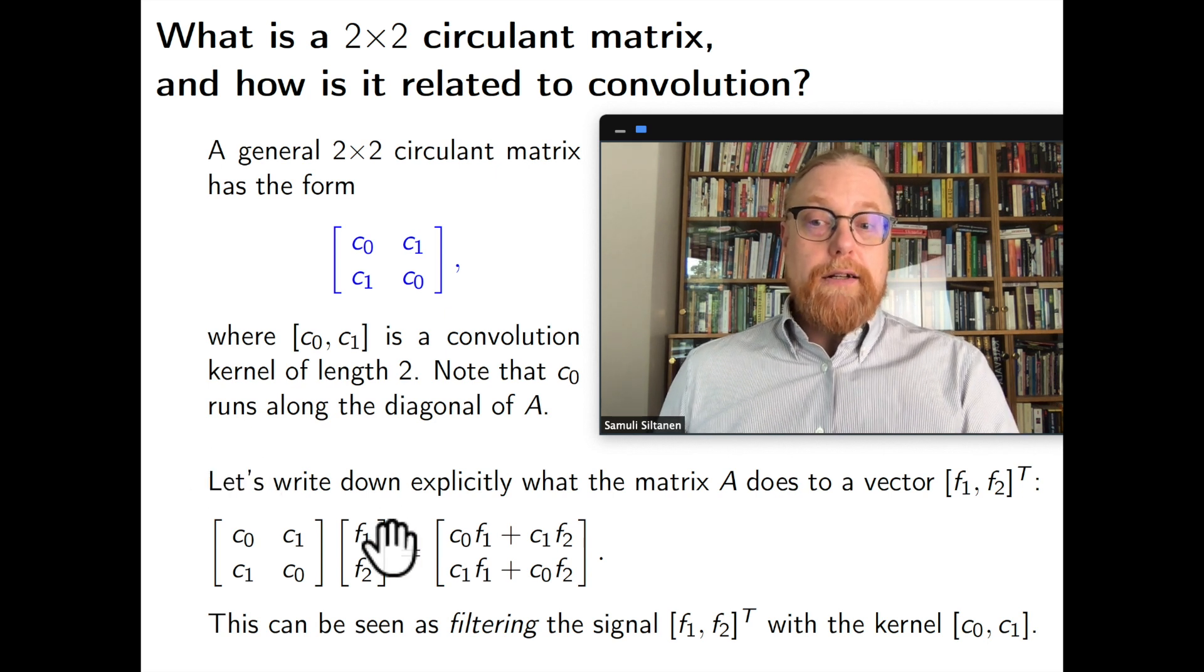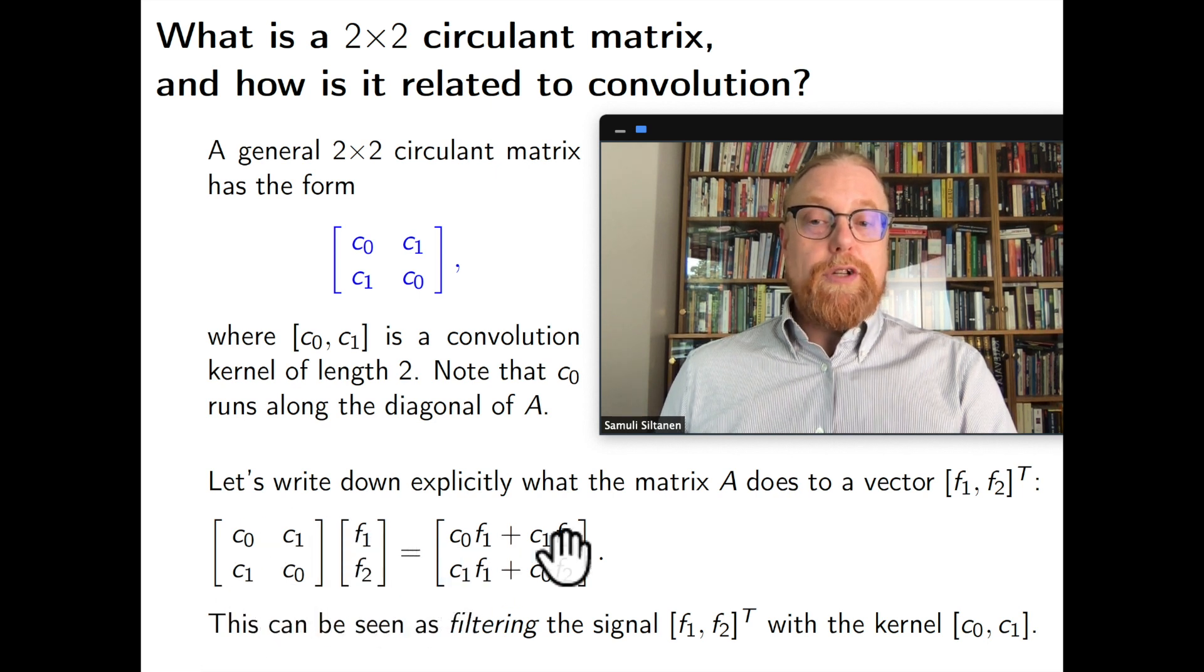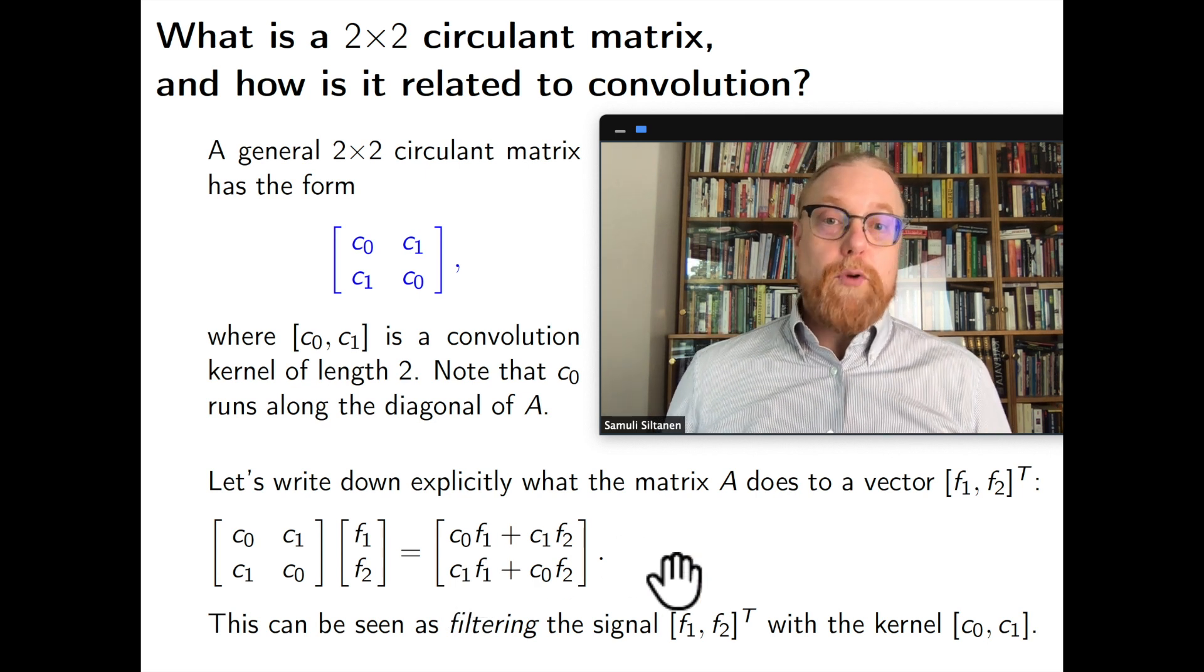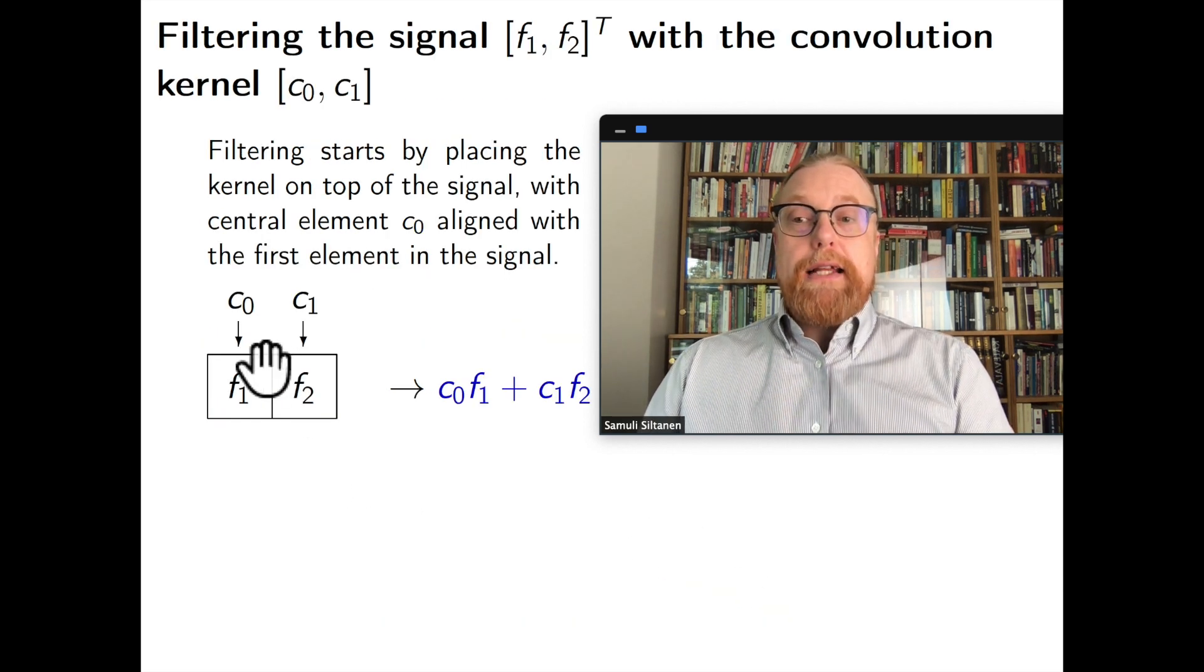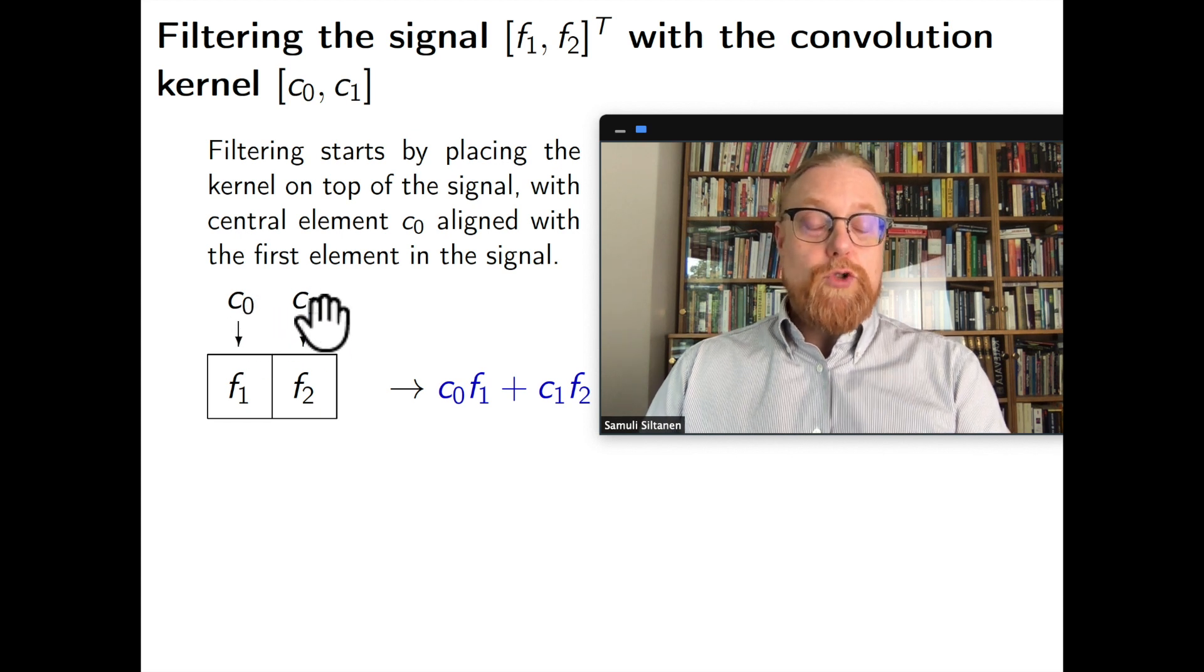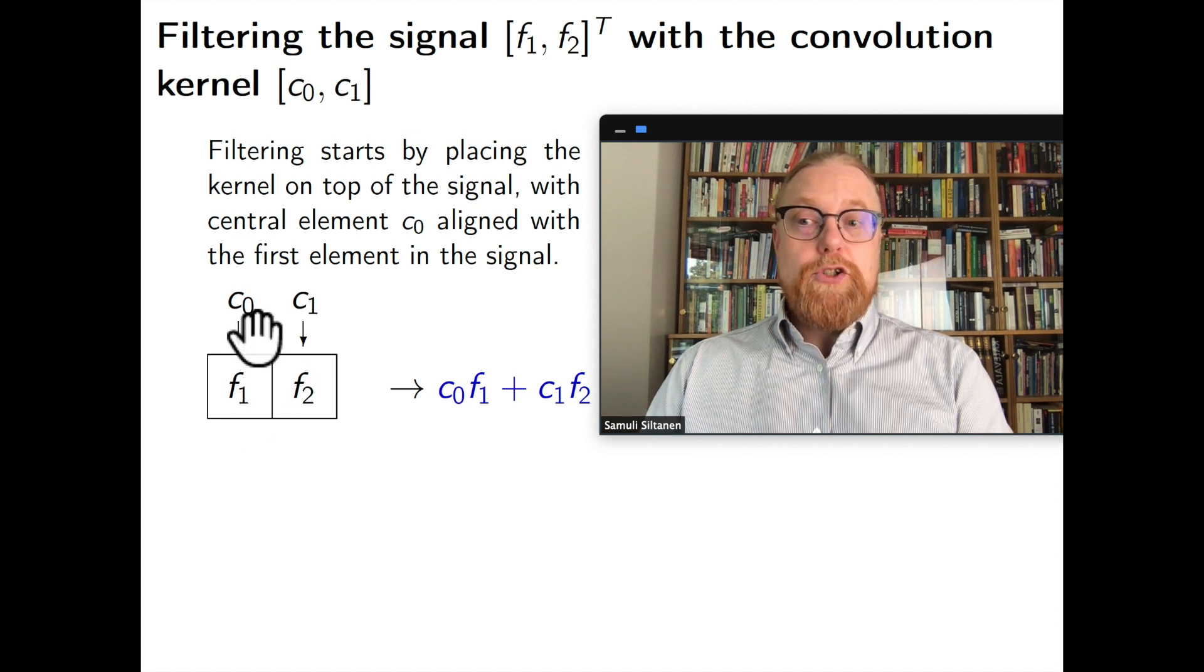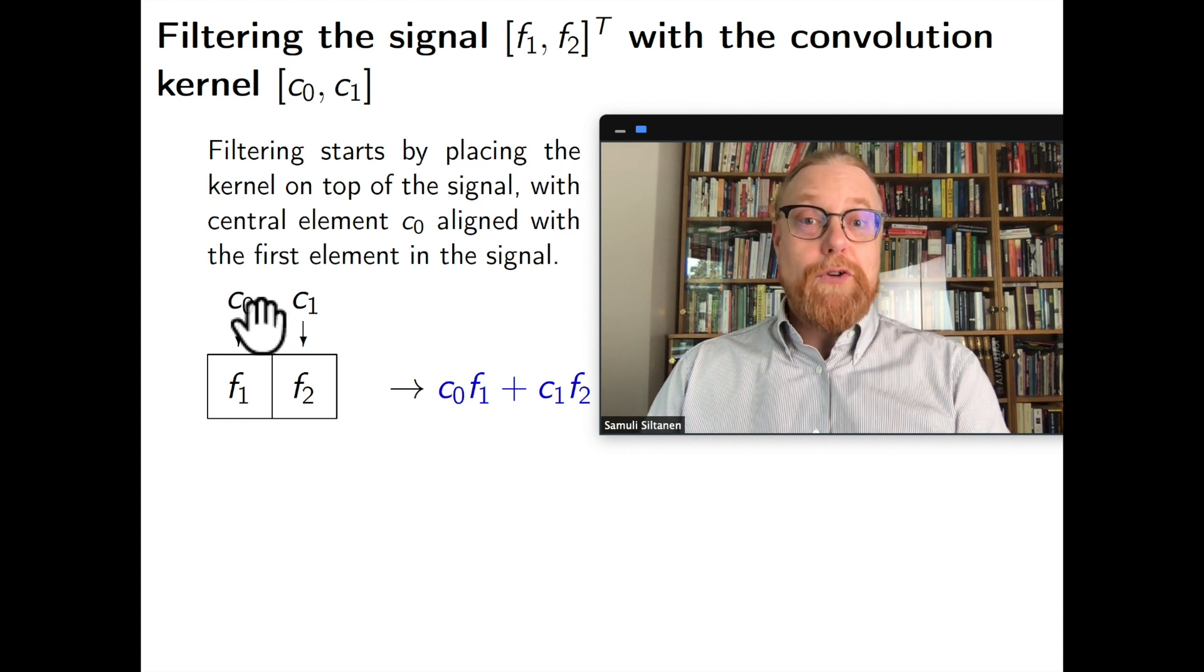This is a circulant matrix and we can also see this as a filtering operation. If we have a signal or vector F1, F2 and we multiply by this matrix the result can be seen as filtering in signal processing. We place our convolution kernel or filter C0, C1 on top of our signal F1, F2 so that the central element in our kernel which is the first one will be on top of the first element in the signal.